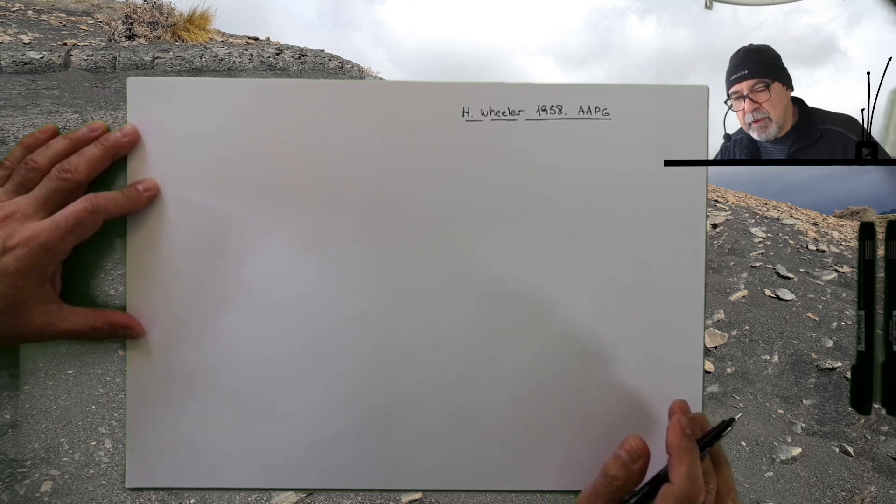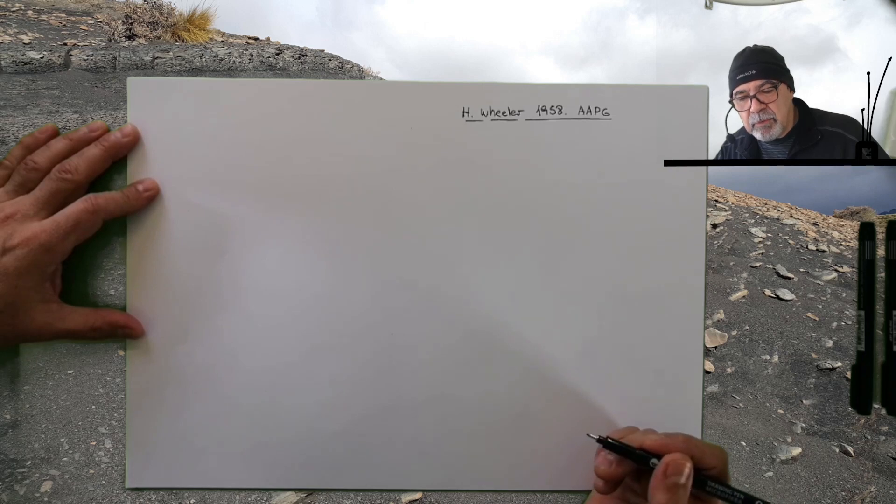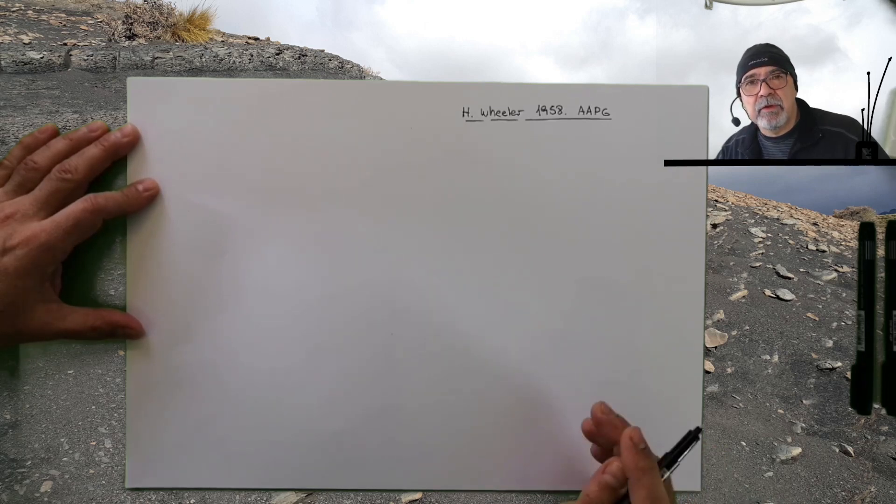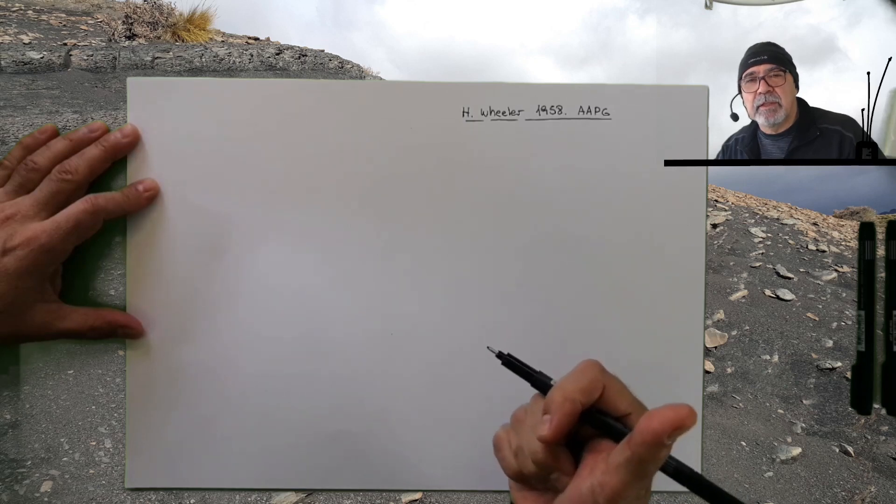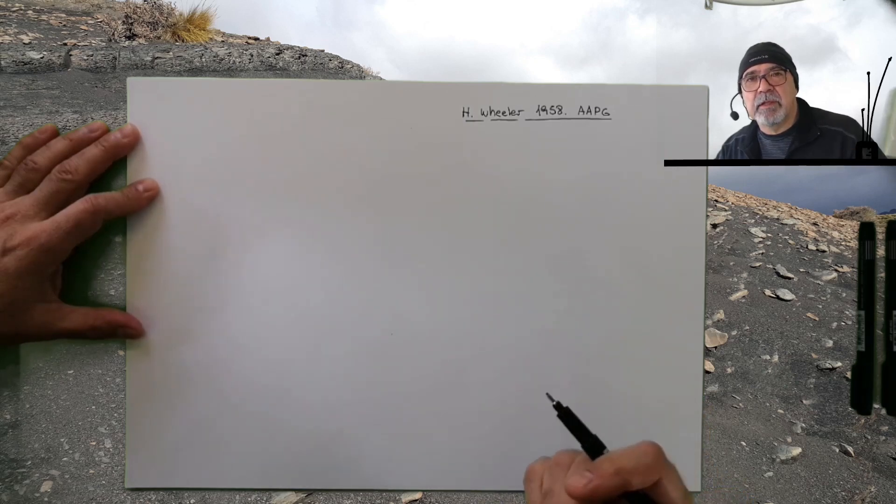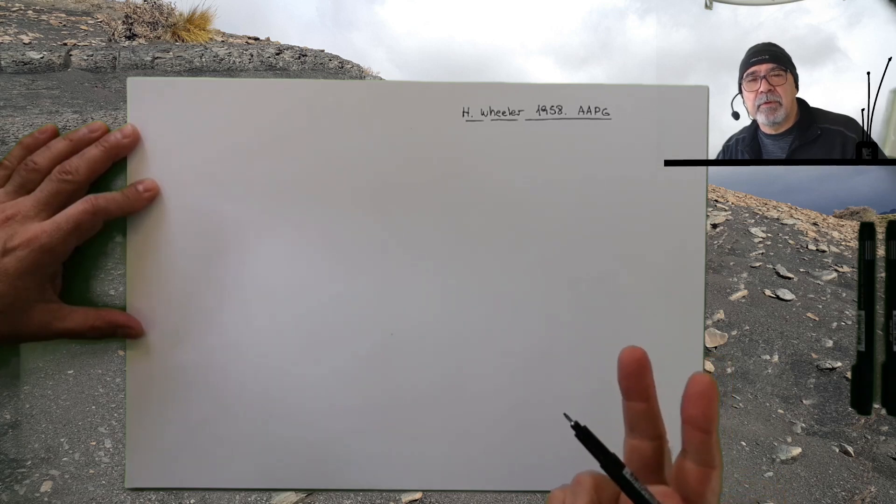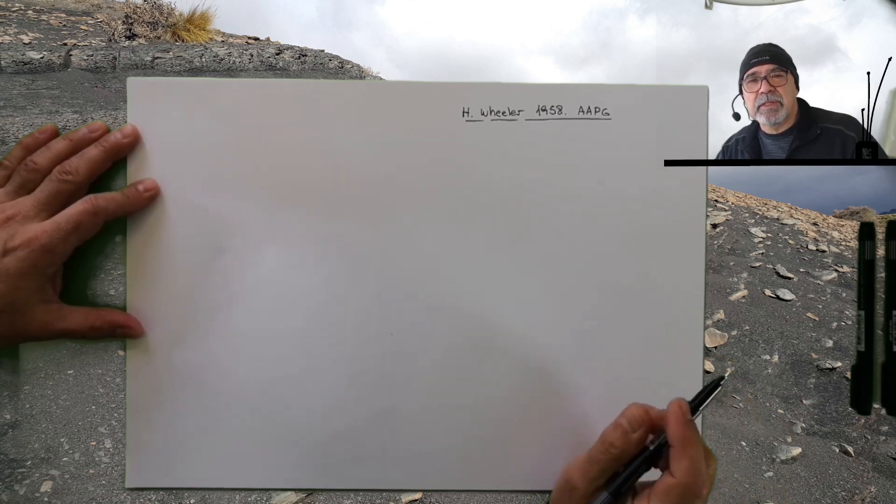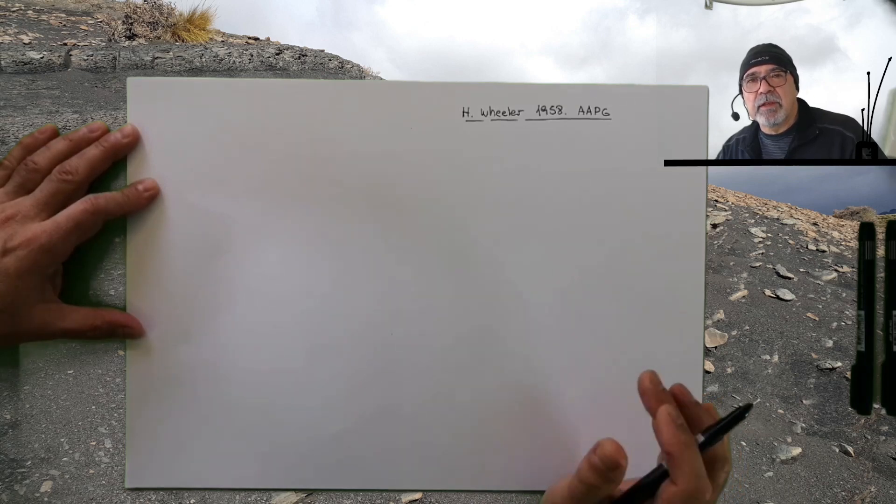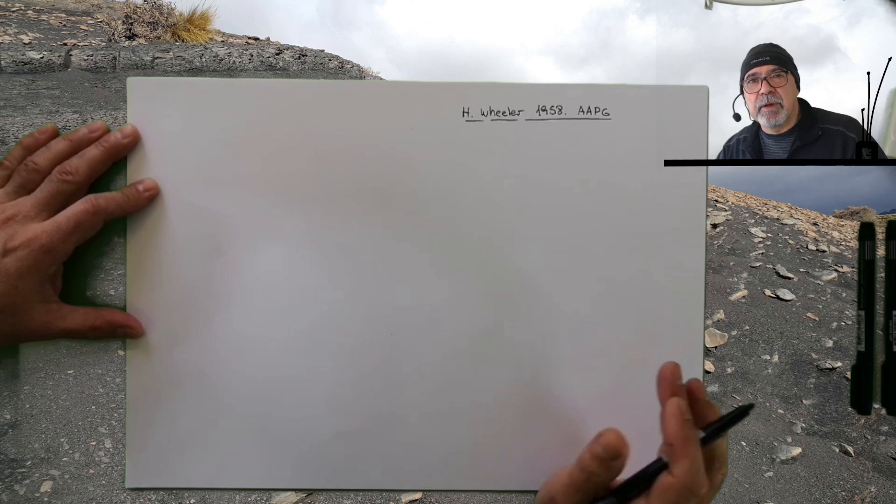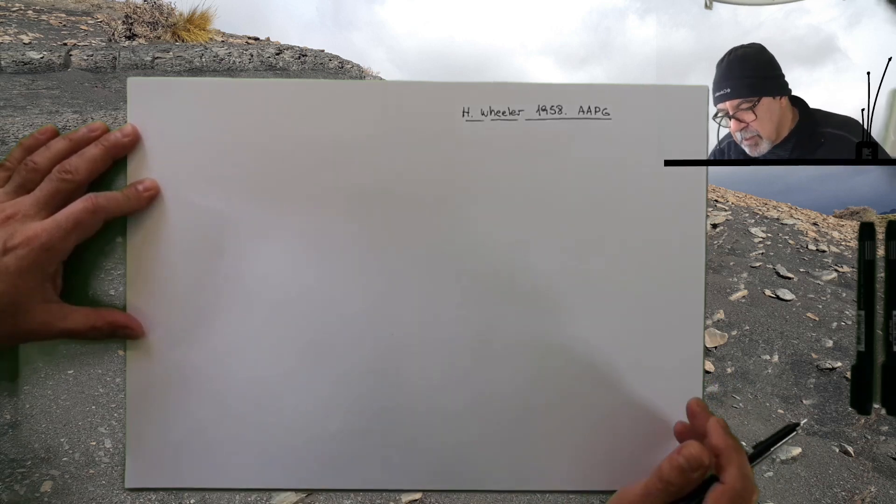Now we are going to make an exercise explaining how to make a Wheeler diagram starting from some basic concepts. We are going to divide this video into three parts. The first part including the main concepts that we are going deeper in the second part, and in the third part we are going to apply with an example of the offshore or something related with clinoforms inside valleys.